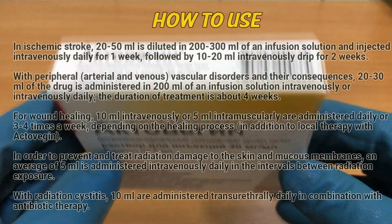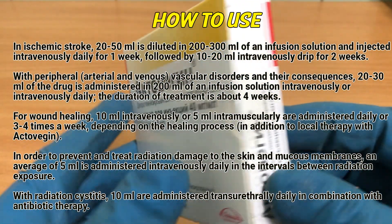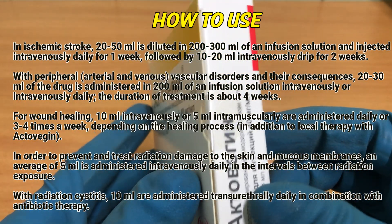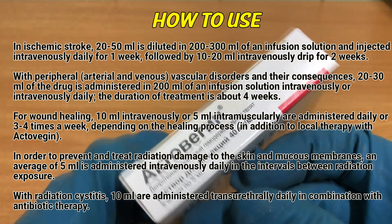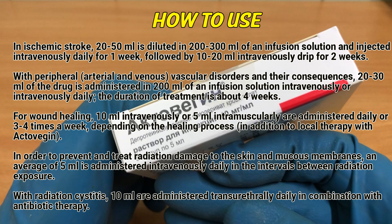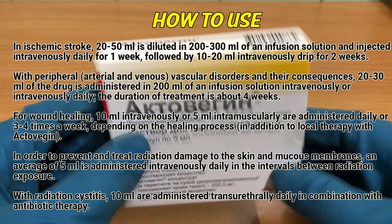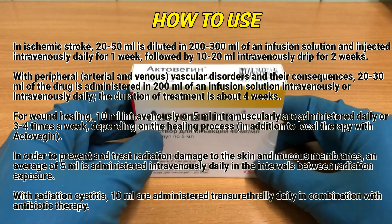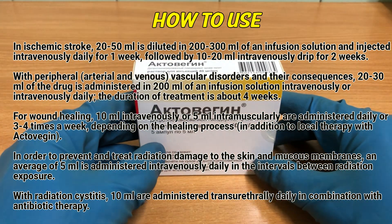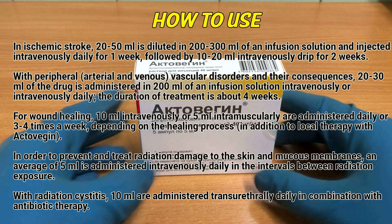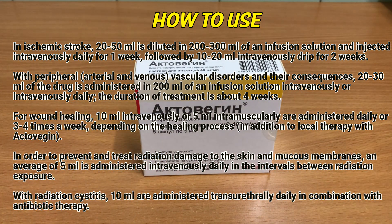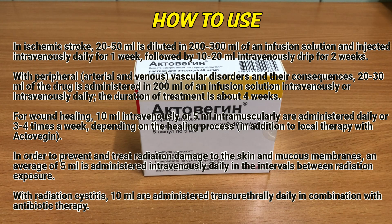Depending on the severity of the clinical picture, the initial dose is 10 to 20 mL IV, then 5 mL intravenously or 5 mL intramuscularly daily. In ischemic stroke, 20 to 50 mL is diluted into 100 to 300 mL of an infusion solution and injected intravenously daily for 1 week, followed by 10 to 20 mL intravenously as a drip for 2 weeks.